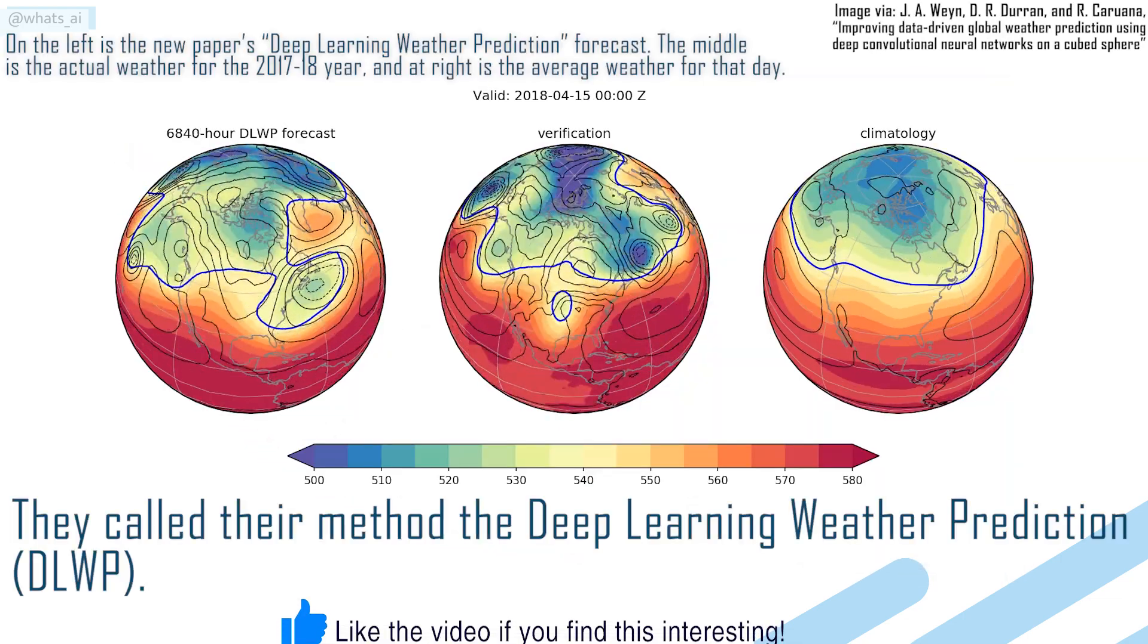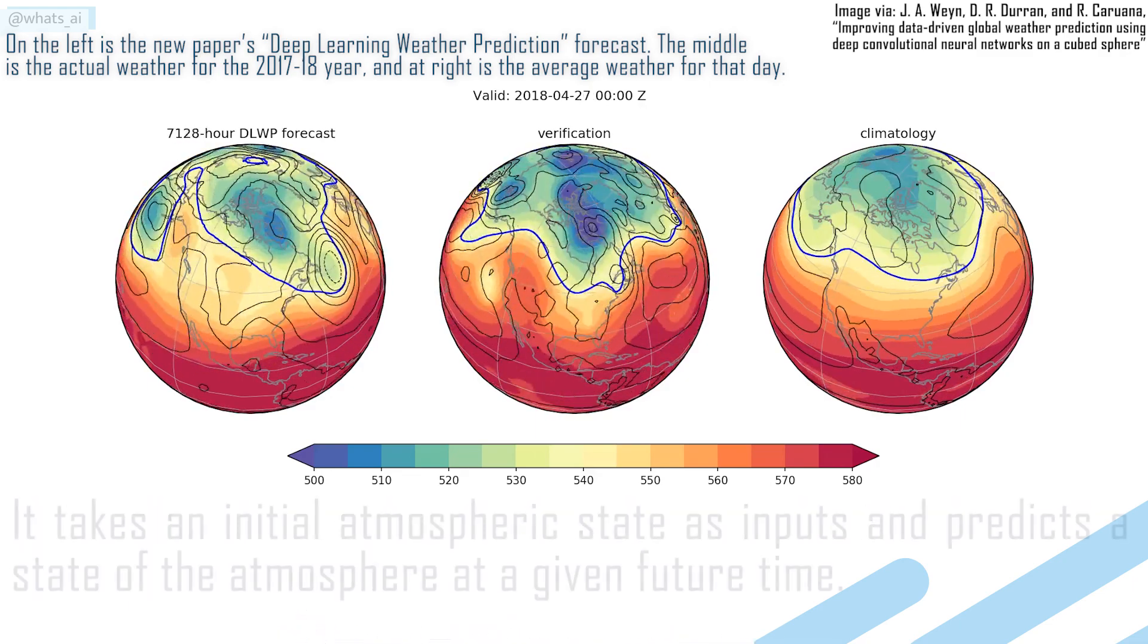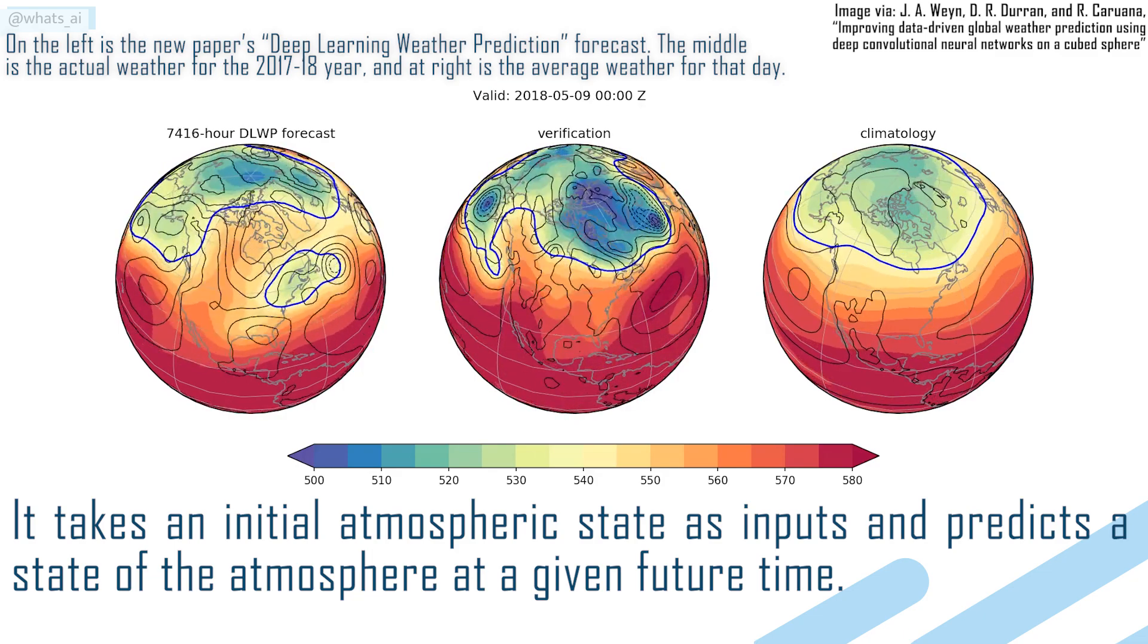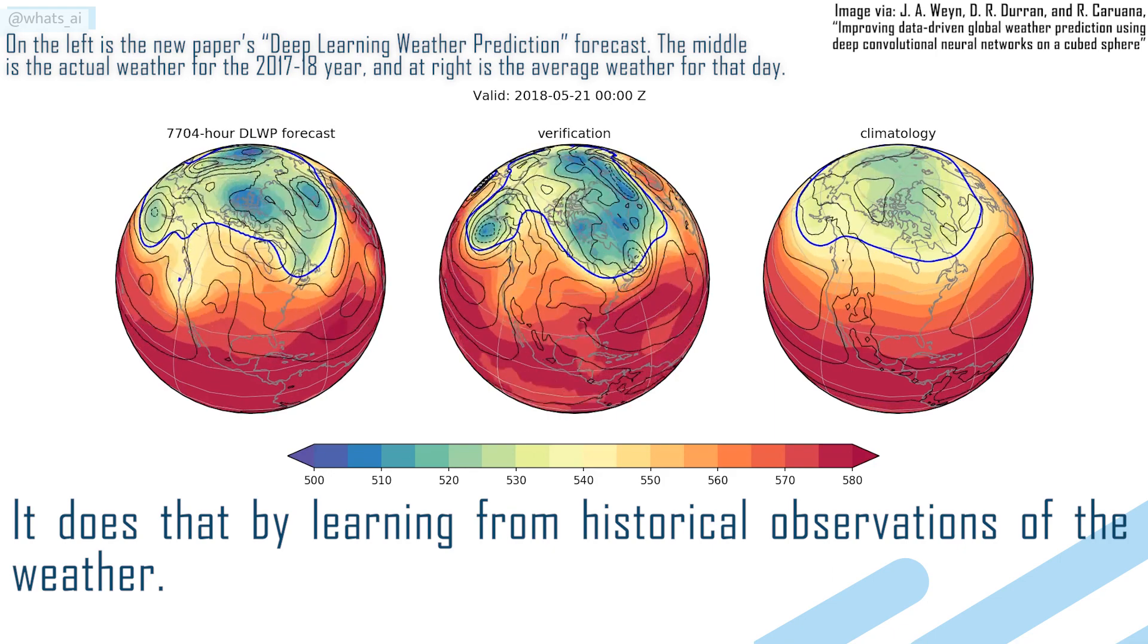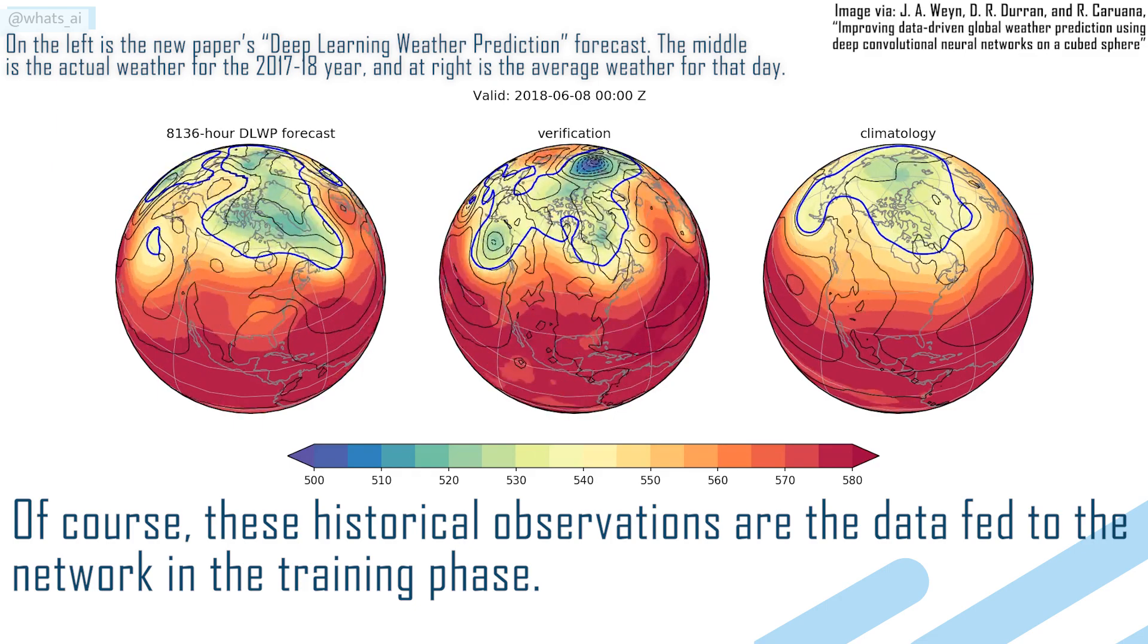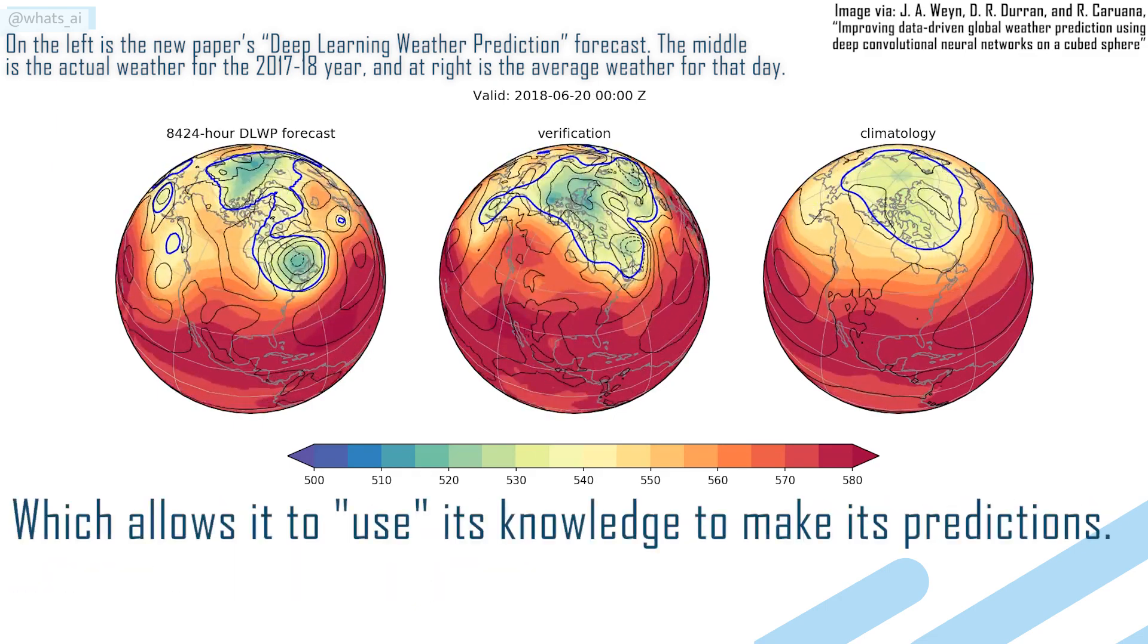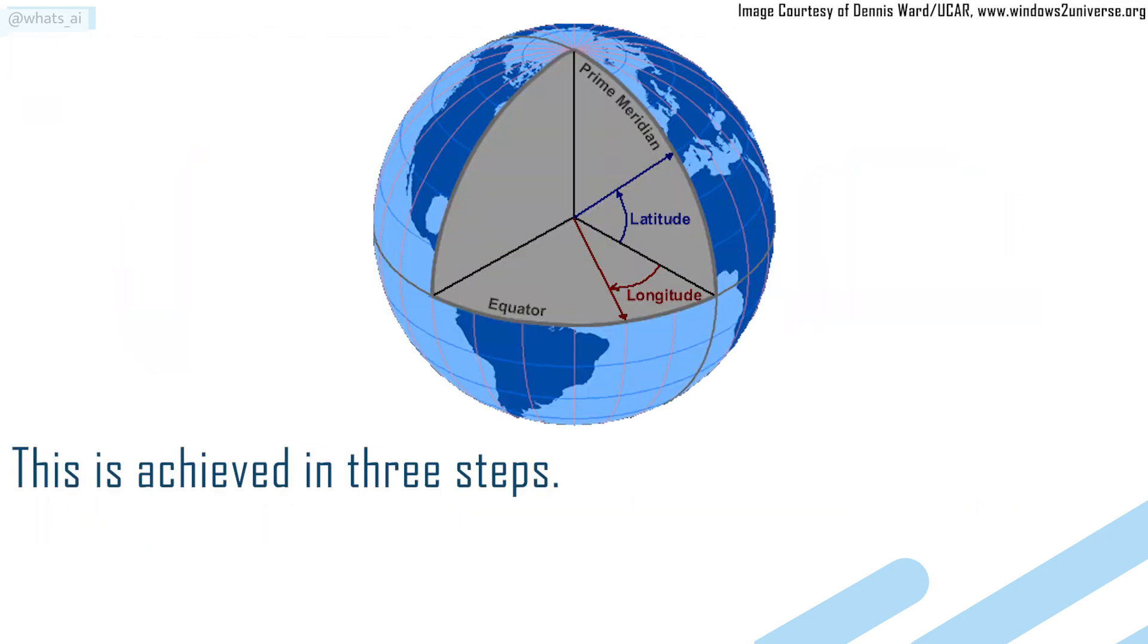They call their method the Deep Learning Weather Prediction. It takes an initial atmospheric state as inputs and predicts a state of the atmosphere at a given future time. It does that by learning from historical observations of the weather. Of course, these historical observations are the data fed to the network in the training phase, which allows it to use its knowledge to make its predictions. This is achieved in three steps.